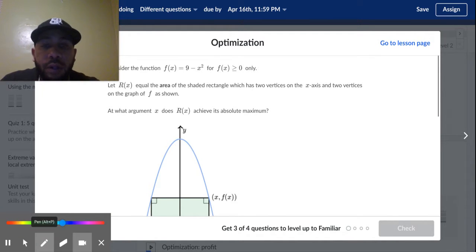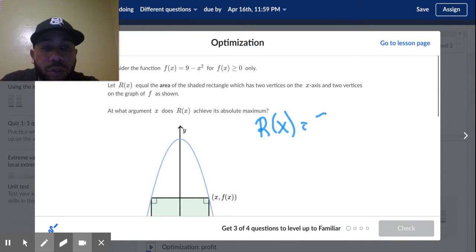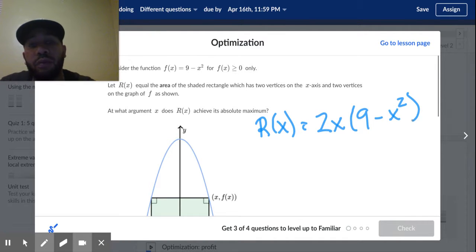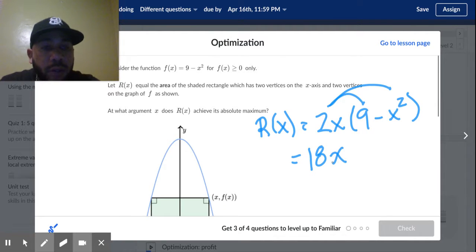All right, but we know that R(x) is going to be equal to 2x times (9 minus x squared). And now, now we're rocking and rolling. We're going to just use a little distributive property there. What's that? 18x minus, what is that? 2x to the third.